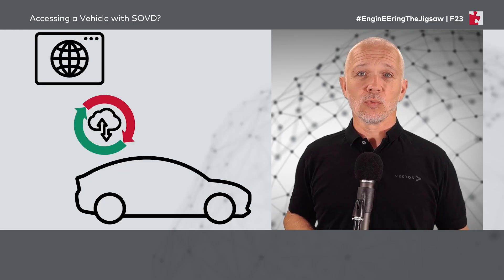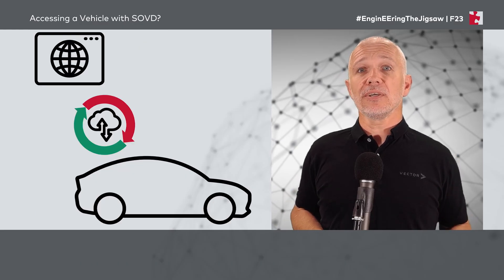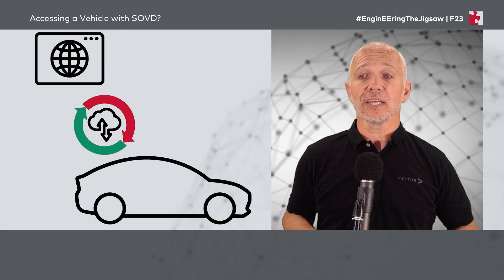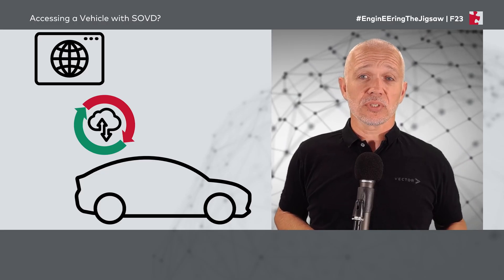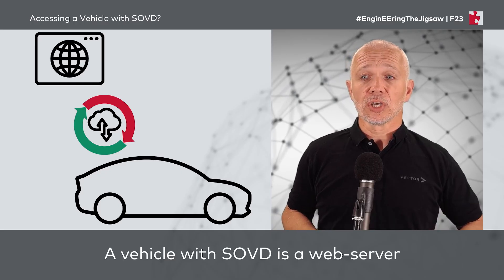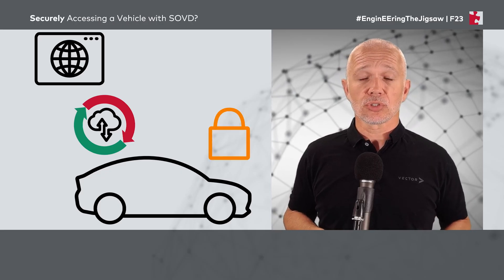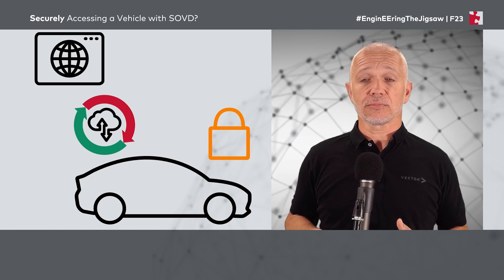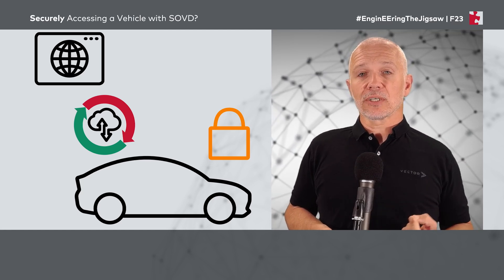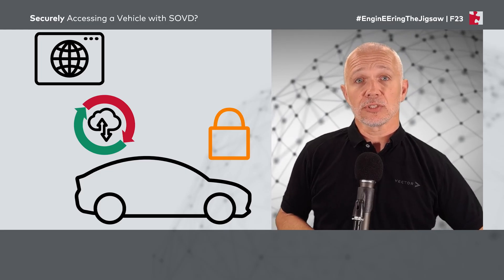What does this mean? Essentially, if we have a vehicle which implements SOVD, we can think of it as a web server. So it's analogous — we can connect web clients such as browsers to that server and retrieve information from it. Of course, if we're able to treat vehicles like web servers, we need this access to be secure.